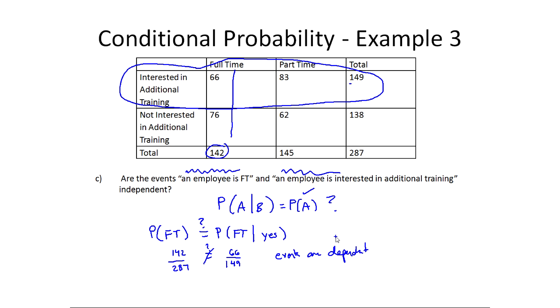So again, conditional probabilities, there is a formula you can use to find them, but a lot of times you don't actually need the formula when you have data set up like this. If you can just think about it logically and say, what group do I know about, and zoom in your probability to that.